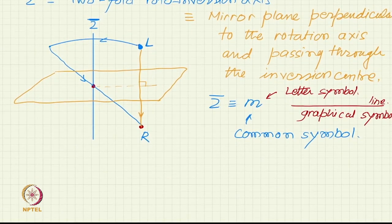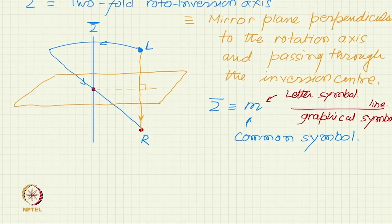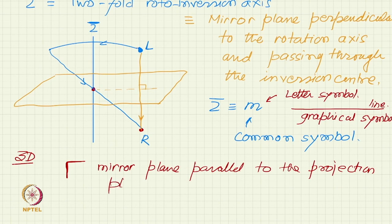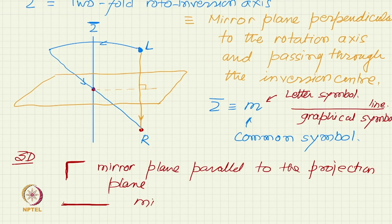The common symbol for 2-bar is m. In 2-D diagrams the graphical symbol is a line, and the written letter symbol is m. In 3-D, in orthographic projections, if the mirror plane is parallel to the projection plane, it is shown in the corner. If in the projection you see a line, you know there is a mirror plane perpendicular to the projection plane.